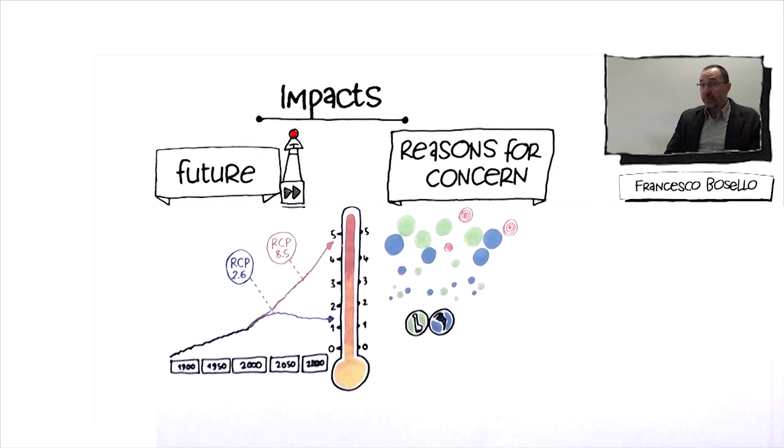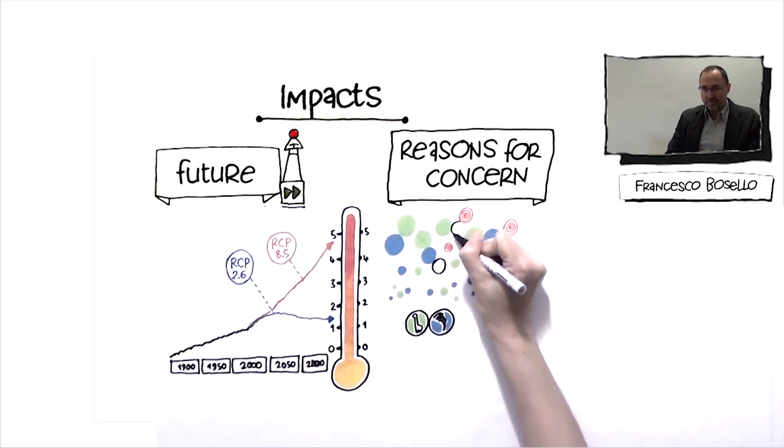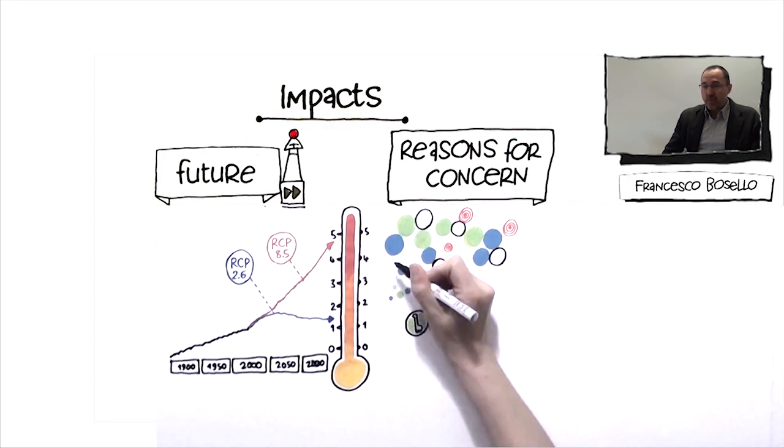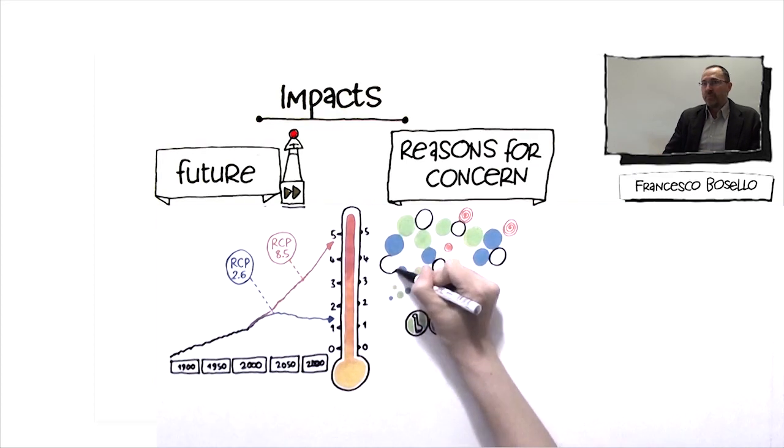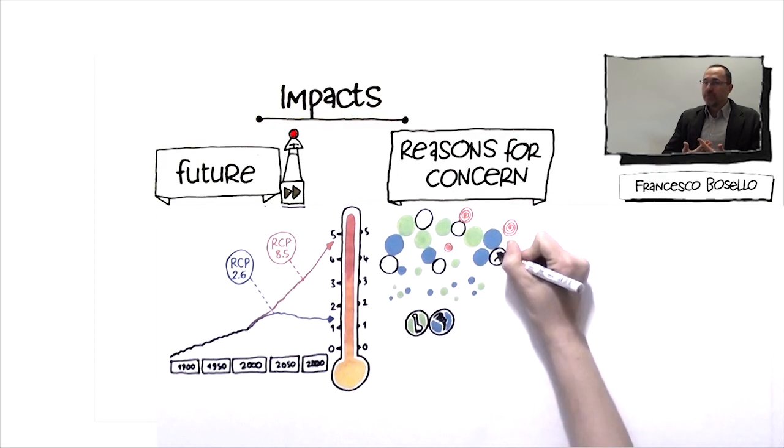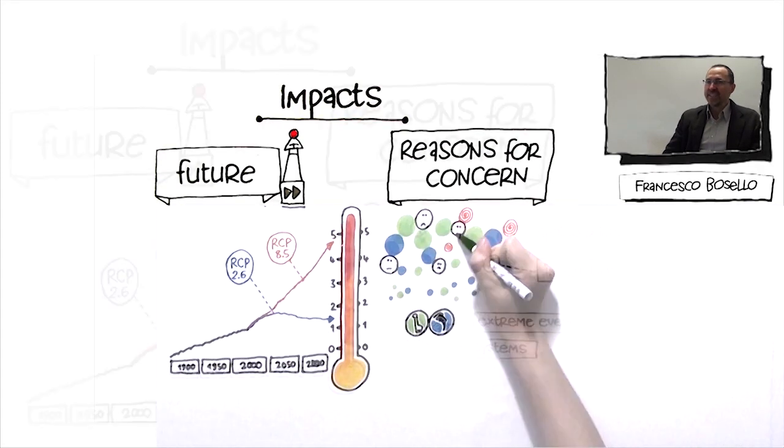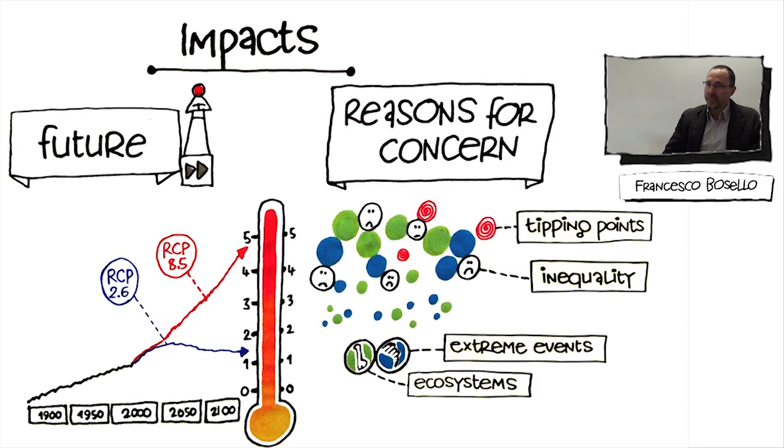Another important reason for concern is the adverse distributional effect that climate change impacts can have. Weaker groups, poorer people, poorer countries are more adversely affected and they are less able to adapt. They are more vulnerable. And this means that climate change impacts increase inequality, and there is the likelihood that this increased inequality is very, very large, especially in the second half of the century and could be unsustainable.